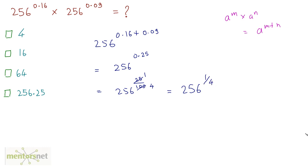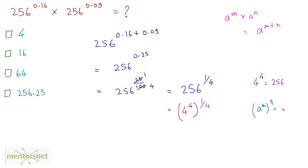Now, we can reduce this further. 256 is equivalent to the fourth power of 4 — that is, 4 raised to 4 equals 256. So this becomes 4 raised to 4, raised to 1 by 4. Using the formula a raised to m raised to n equals a raised to m times n, this is 4 raised to 4 times 1 by 4. The 4s cancel, leaving 4 raised to 1, which is 4. So the answer is option A.